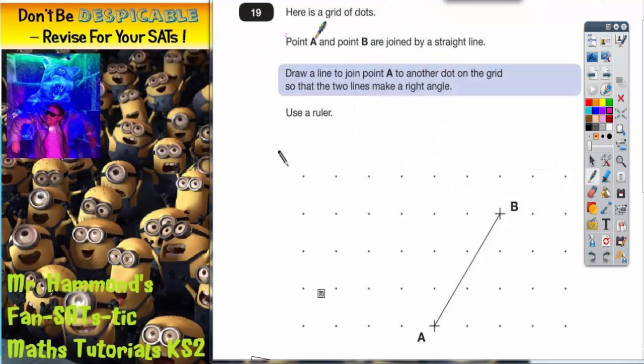Question 19. Here is a grid of dots. Point A and point B are joined by a straight line. There's the two points and there's a straight line. Draw a line to join point A to another dot on the grid so that the two lines make a right angle.